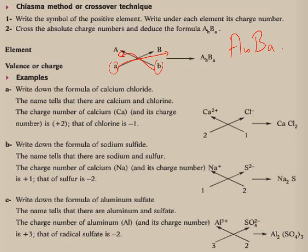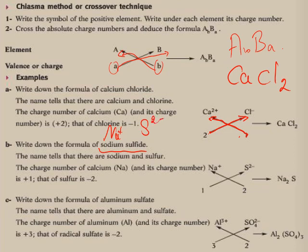Using the crossover technique for calcium chloride: charge 2 crosses to Cl giving Cl₂, charge 1 crosses to Ca giving Ca₁ — so the formula is CaCl₂ (always write cation first). For sodium sulfide: Na⁺ (charge 1) and S²⁻ (charge 2) — 2 crosses to Na, 1 crosses to S, giving Na₂S.